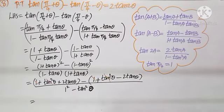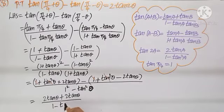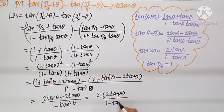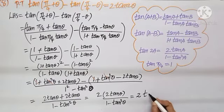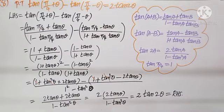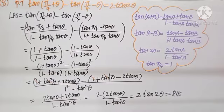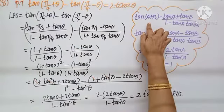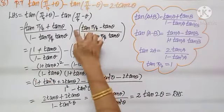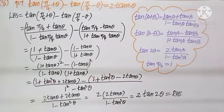We are left with 2 tan θ, and minus of minus is plus 2 tan θ, divided by 1 minus tan² θ. That equals 4 tan θ by 1 minus tan² θ — wait, that is 2 times 2 tan θ by 1 minus tan² θ, which is 2 tan 2θ, and that is the RHS. So we used four different formulas: tan(a+b), tan(a-b), the value of tan(π/4) equals 1, and the tan 2a formula.